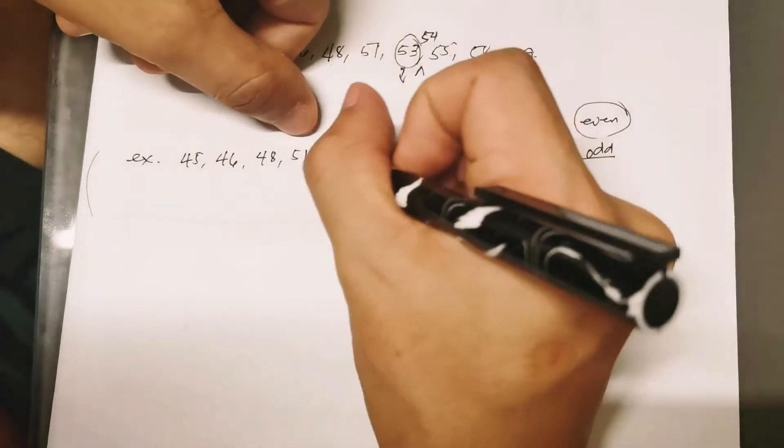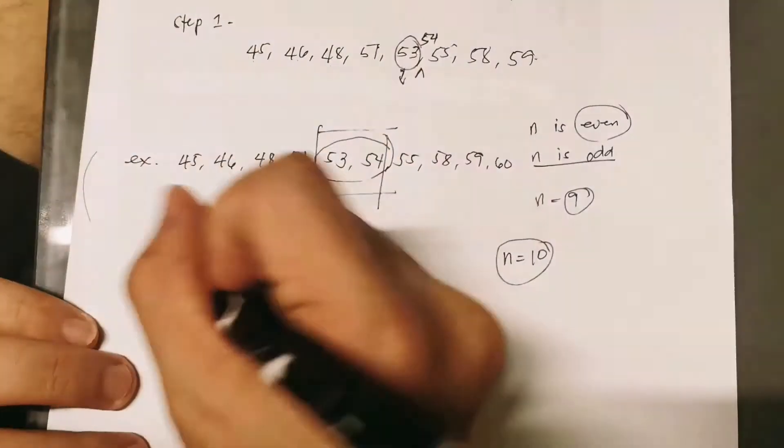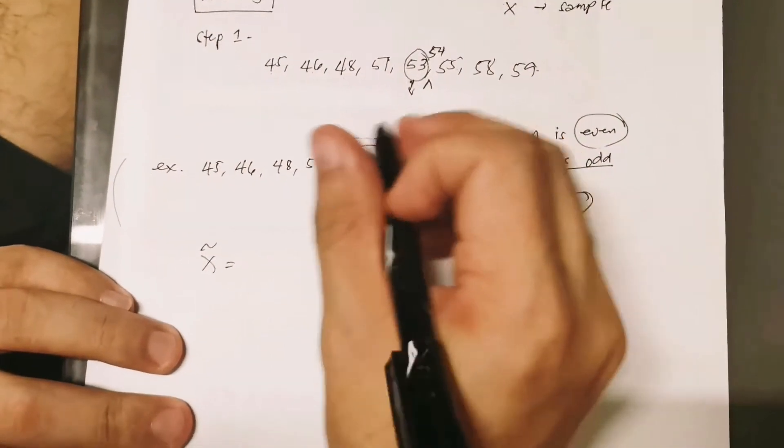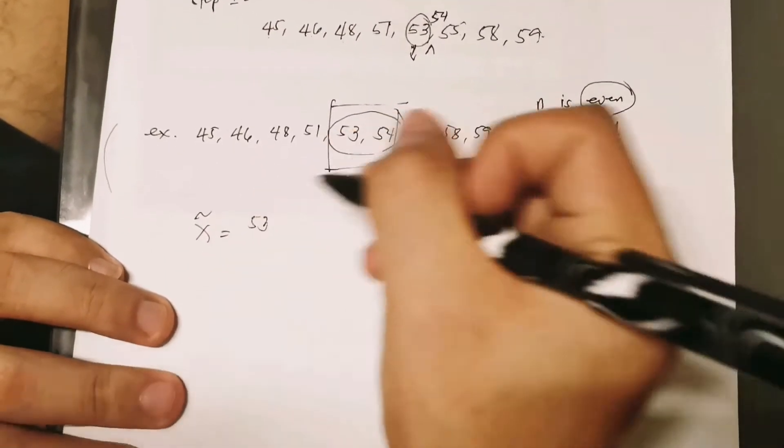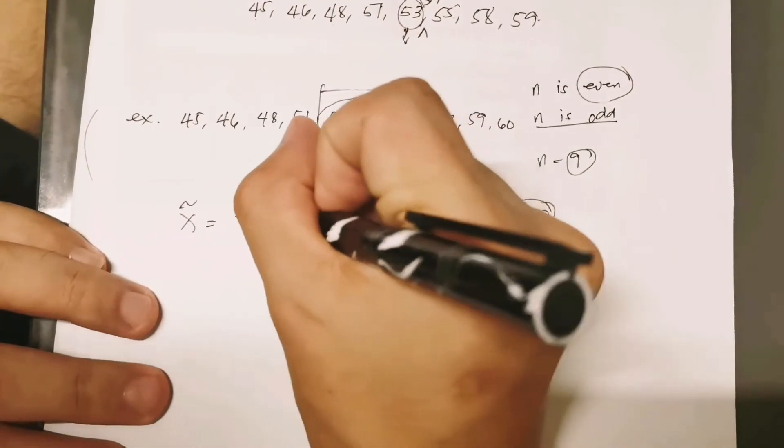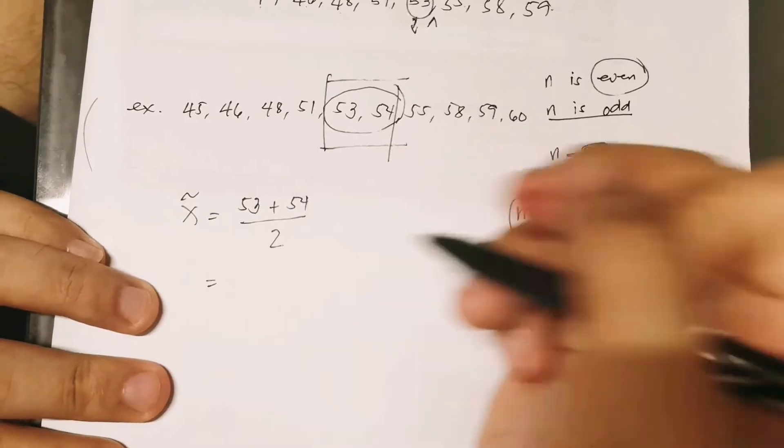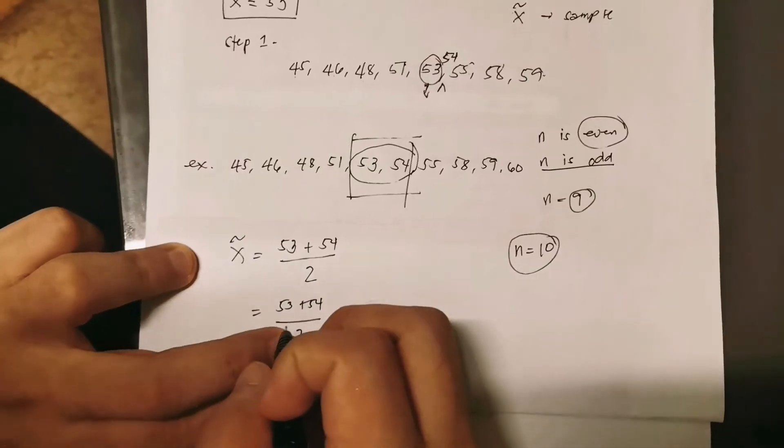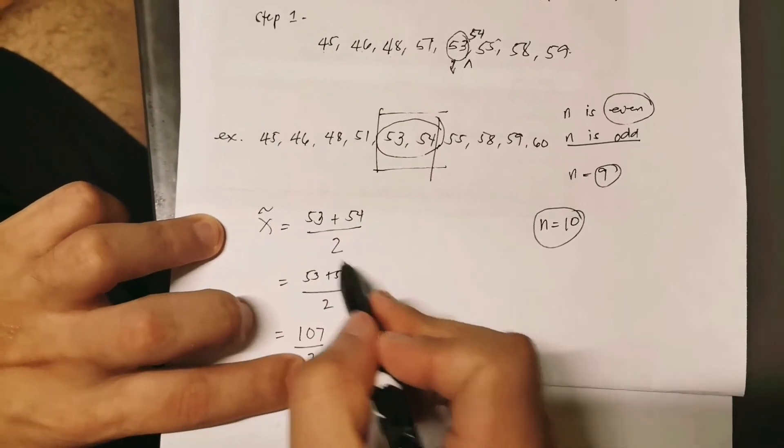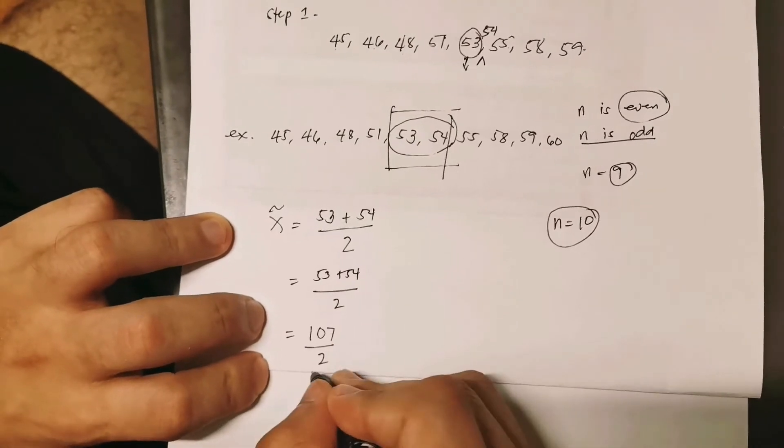If we're going to pair this: pair, pair, pair, pair, pair. We have two middle scores. The two middle scores here are 53 and 54 years old. To find the median or the x tilde, we should simply combine and get the average of the two middle scores or the two middle entries: 53 plus 54. Since there are two, we divide by two.